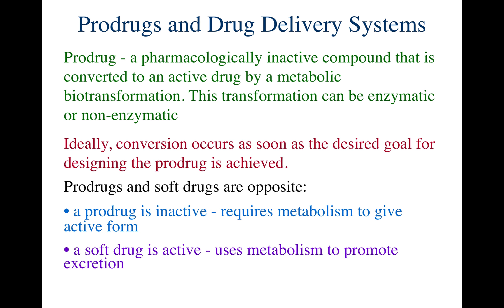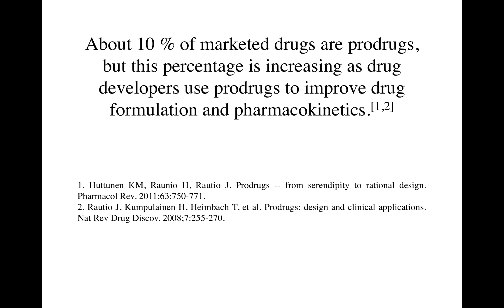It is also important to note the difference between prodrugs and soft drugs. A prodrug is an inactive compound that requires metabolism or hydrolysis to give the active form. A soft drug is already the active chemical agent — it uses metabolism to promote excretion, not to form the active compound. It is already in the active form and only uses metabolism to promote excretion.